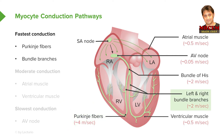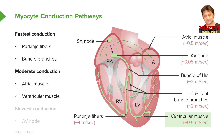Right behind that are the right and left bundle branches — those are the areas right along the septum — and they also conduct electricity very rapidly. The ones that conduct it a little more slowly are in the atrial muscle and ventricular muscle, which represent a moderate level of electrical conduction speed.